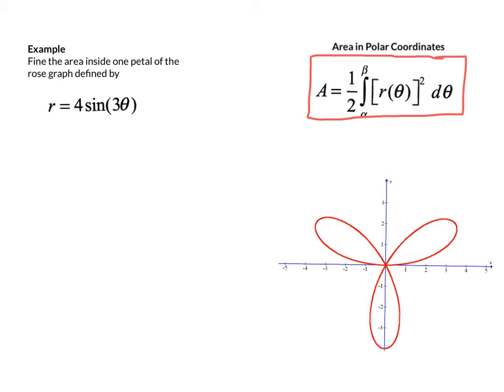So what we need to do here, if we look at our graph, it would probably be simplest to get this petal over here, the one in quadrant one. What we need to do then is to determine what are the bounds of theta for this graph. As we rotate from 0, we can figure out pretty easily that this graph is at the pole at 0.